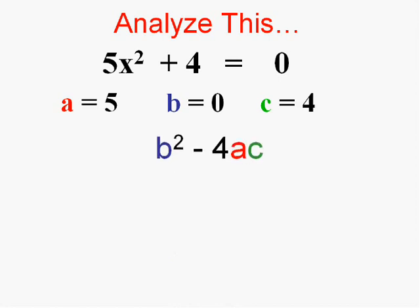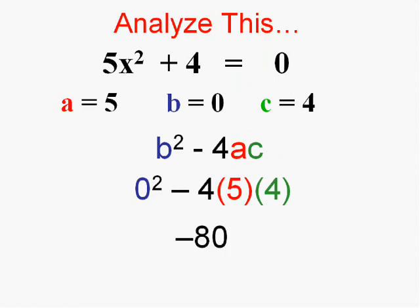The discriminant will be B squared or 0 squared minus 4 times 5 times 4. So the discriminant comes out to negative 80, doesn't it? So what do you know when the discriminant comes out to a negative number? Might as well stop right there because the answers are going to be imaginary. They're going to be useless in the real world. Two imaginary roots.